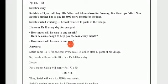Satish is a 13-year-old boy. His father had taken a loan for farming, but the crops failed. Now Satish's mother has to pay Rs. 5,000 every month for the loan.